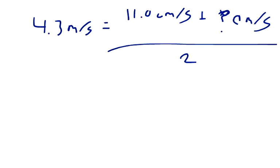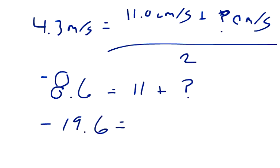So I multiply both sides by 2, I get negative 8.6 equals 11 plus unknown. Actually, let me make sure that's negative, negative 8.6. So then I can subtract 11 from both sides and I get negative 19.6 equals final velocity.